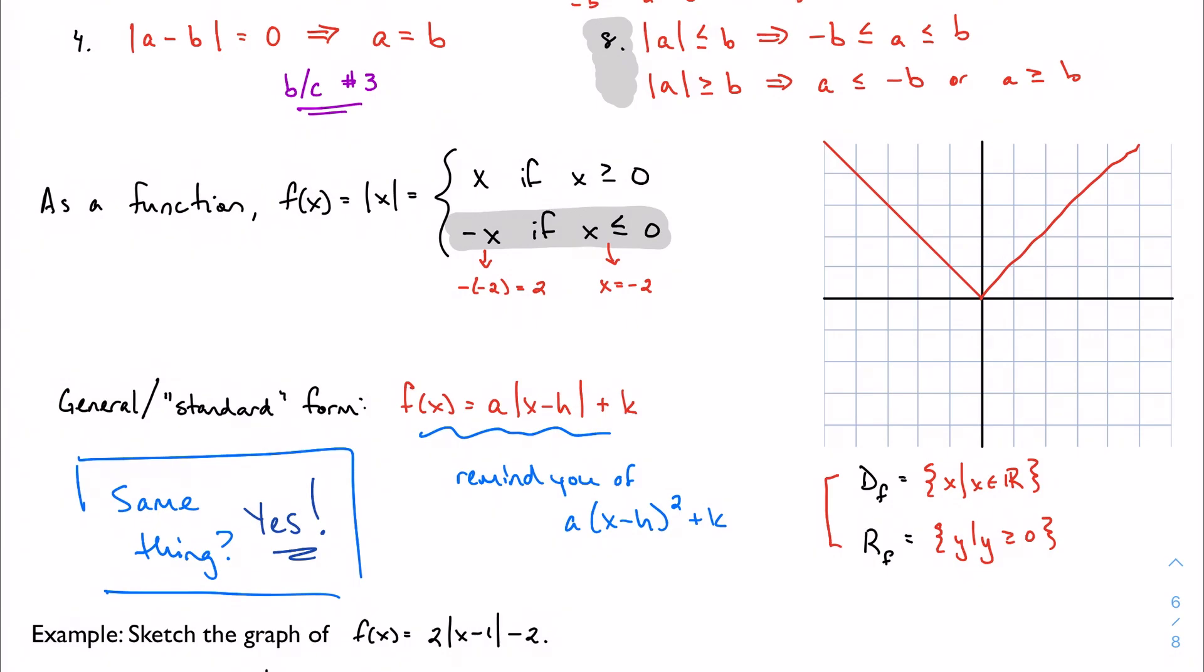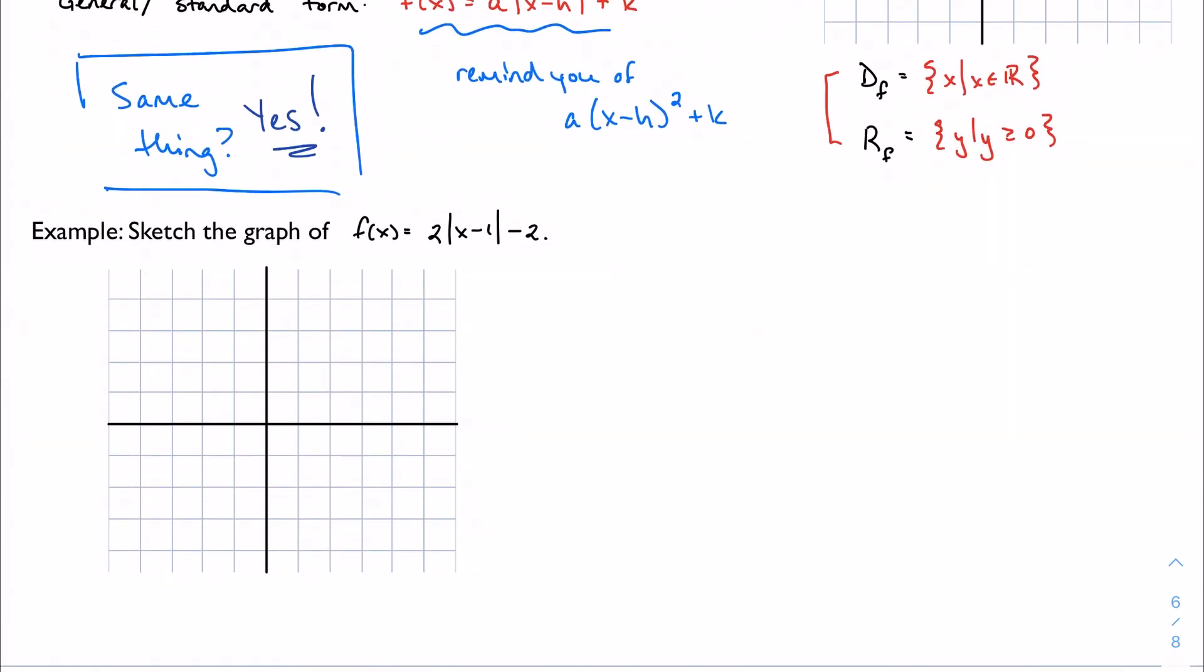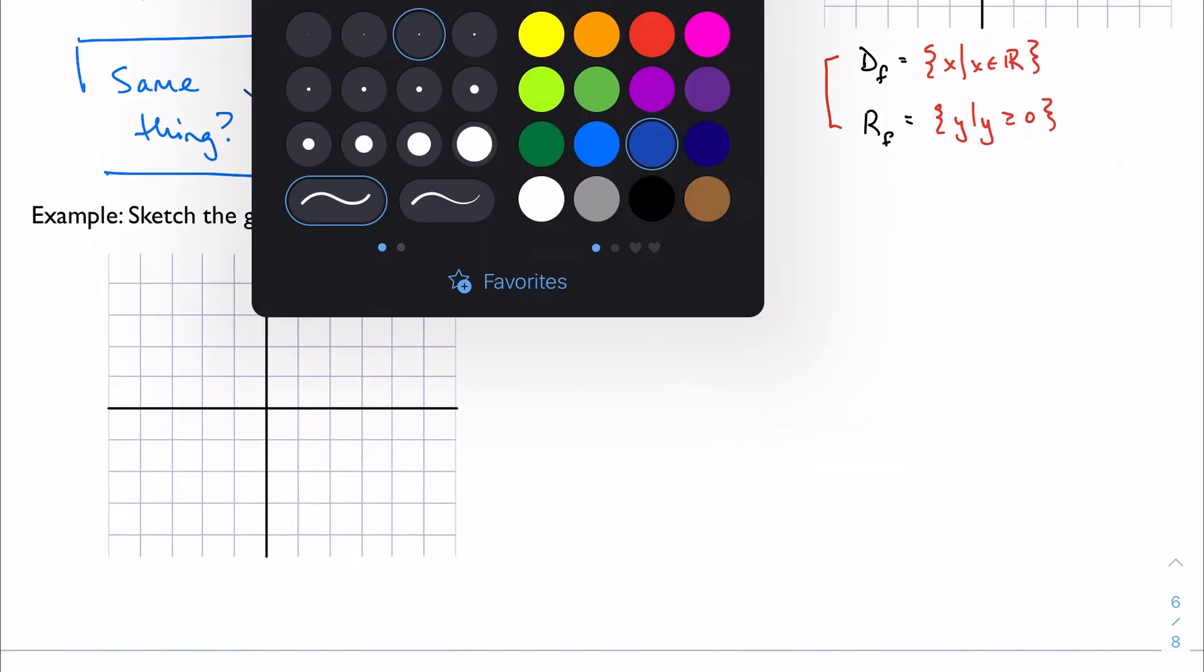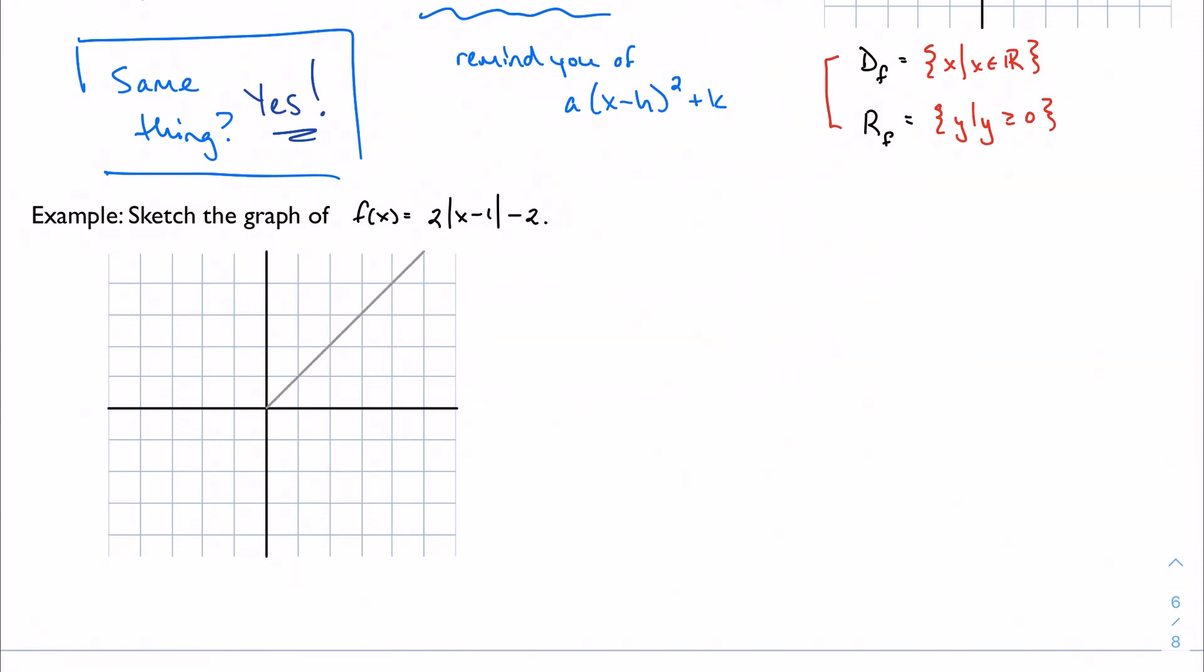For example, if I want to sketch the graph of 2|x − 1| − 2, pretty easy. Let me draw my parent function so I have it handy. Here's my parent function, just the absolute value of x. If we think back to our quadratic investigation, I'm going to have a horizontal shift to the right 1 because of my −1, and a vertical shift down 2 because of my −2. So we can think about this vertex as being at (1, −2), so I'm going to plot that first.